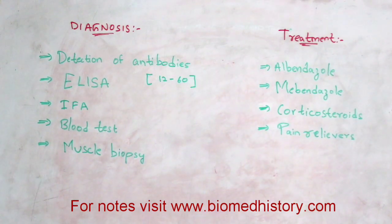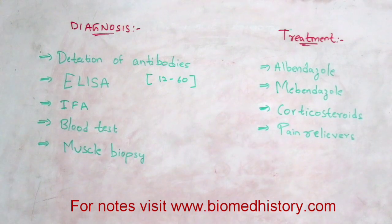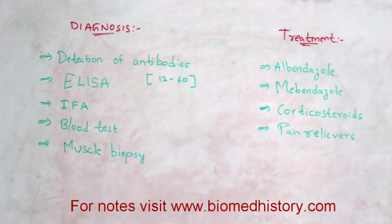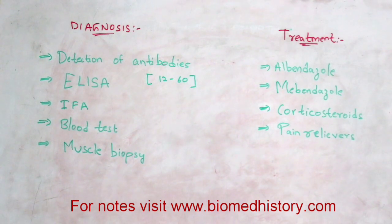Treatment includes albendazole, mebendazole, corticosteroids, and pain relievers. Corticosteroids are used when trichinosis presents with allergic reactions. Thank you for watching. If you like this video, please like and subscribe, and comment any doubts in the comment box.